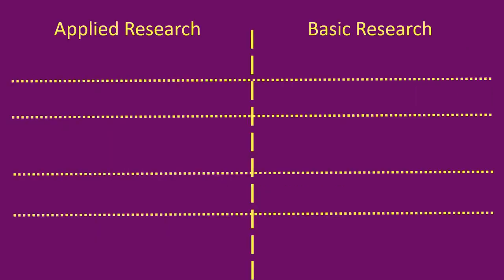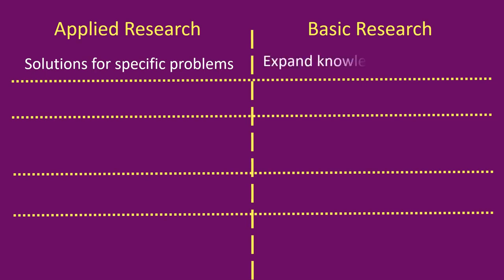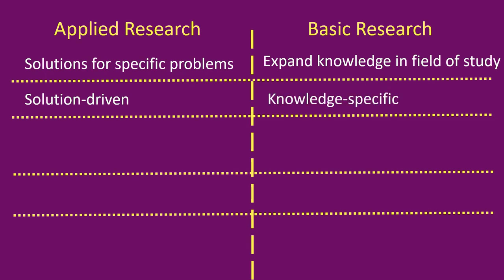Difference between Applied and Basic Research: Applied Research is a research methodology that creates practical solutions for specific problems, while Basic Research is an approach to research that seeks to expand knowledge in a field of study. This means that Applied Research is solution driven while Basic Research is knowledge specific.